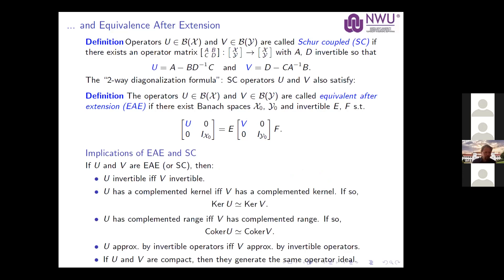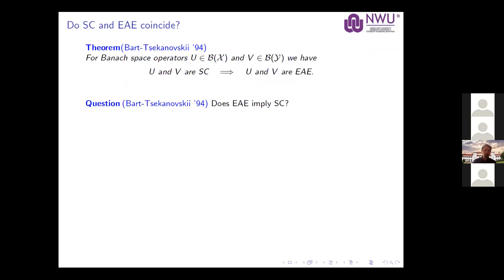Two operators that are Schur coupled share many properties. If they are equivalent after extension or Schur coupled, then one is invertible if and only if the other is. Furthermore, one has a complemented kernel if and only if the other one has a complemented kernel, same with complemented ranges, and more recent results include: one can be approximated by invertibles if and only if the other can, and when U and V are compact operators they generate the same operator ideal.